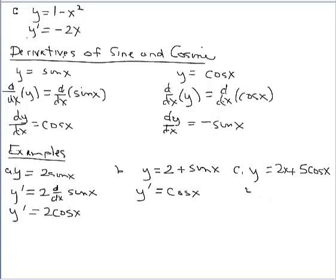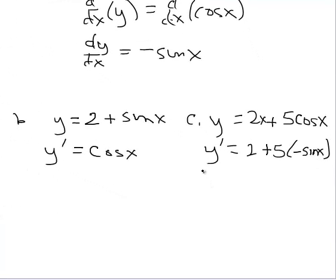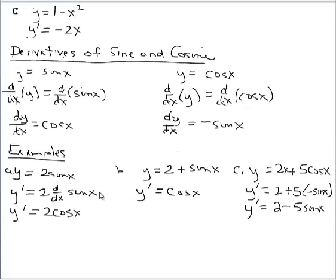Let's look at one more with two terms. Y prime equals: the derivative of 2x is 2. Then we use the constant multiplier rule for the next term — each term may require a different differentiation rule. This gives plus 5 times the derivative of cosine, which is negative sine x. Cleaning that up: y prime equals 2 minus 5 sine x. So it's term by term differentiation, with each term potentially requiring a different differentiation rule.